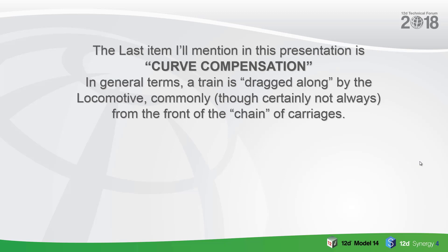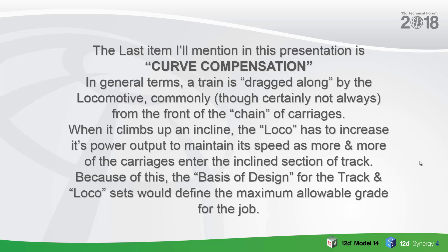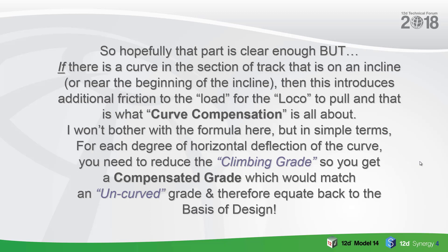The last item I'll mention in this presentation is curve compensation. In general terms, a train is dragged along by the locomotive — commonly, though not always, at the front of a chain of carriages. If you're working with heavy rail, you may end up with a configuration of two or three locos at the front, two or three in the middle of the carriages, and another two or three at the end. So when the train starts to climb an incline, the loco has to increase its power output to maintain speed as more carriages enter the inclined section. The basis of design for the track and loco sets would define the maximum allowable grade. But if there's a curve in the section of track that is on an incline, this introduces additional friction to the load for the loco to pull — and that is what curve compensation is all about.